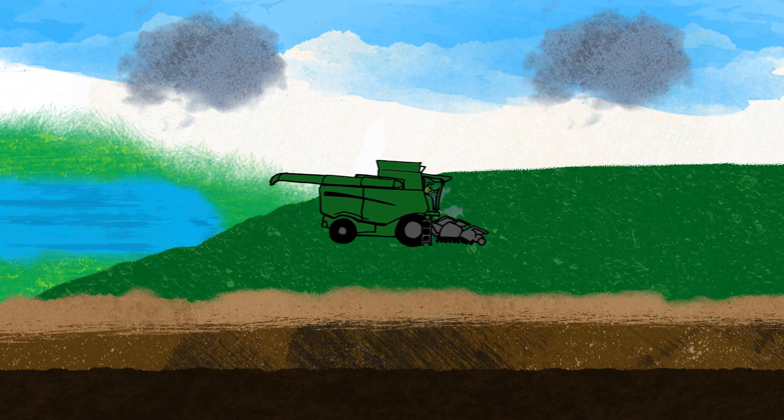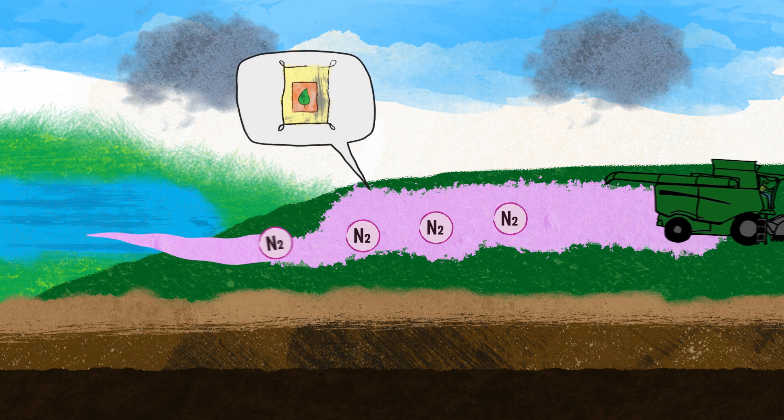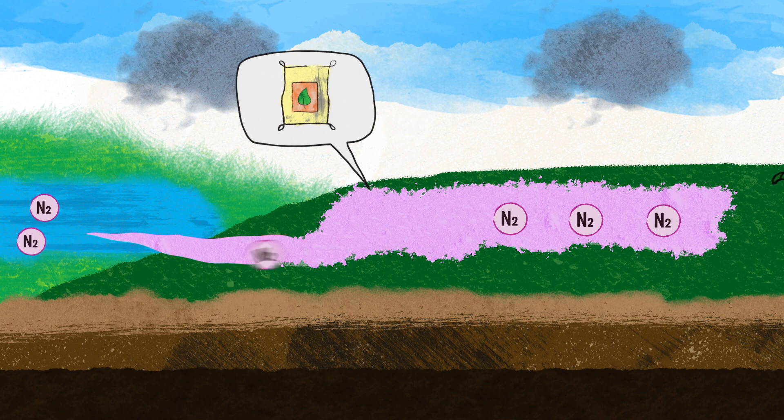Farmers add nitrogen to the soil through fertilizer use. Runoff from fields carries excess fertilizer into water bodies.